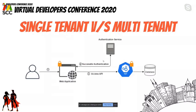In this database we have security information concerning the specific customer. This is how a single-tenant application looks — we have a specific tenant accessing the application. Then you are requested to build the same application for another customer, say Mighty. Now there are two customers who will be using your web application.